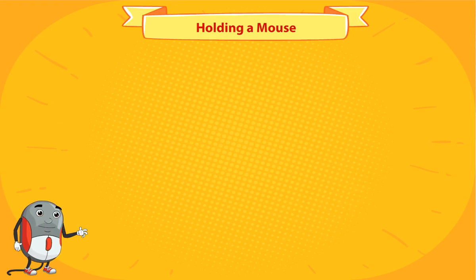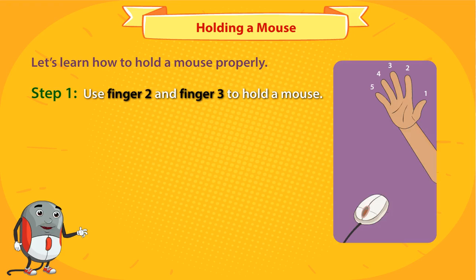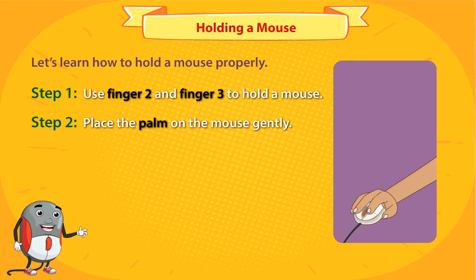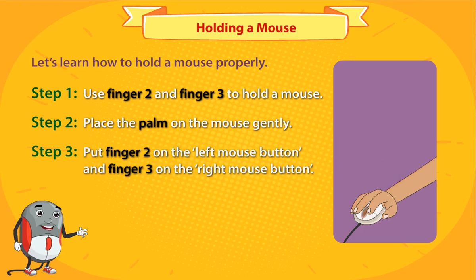Holding a mouse. Let's learn how to hold a mouse properly. Step 1: Use finger 2 and finger 3 to hold a mouse. Step 2: Place the palm on the mouse gently. Step 3: Put finger 2 on the left mouse button and finger 3 on the right mouse button.